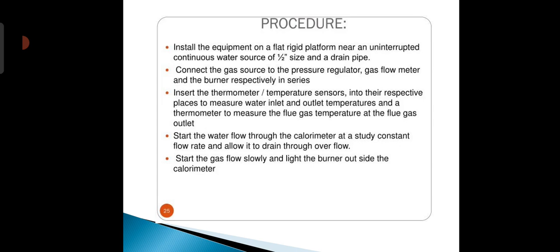Insert the thermometer or temperature sensor into their respective places to measure water inlet and outlet temperature, and a thermometer to measure the fuel gas temperature at the fuel gas outlet. Start the water flow through the calorimeter at steady constant flow rate and allow it to drain through overflow. Start the gas flow slowly and light the burner outside the calorimeter.